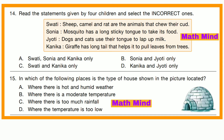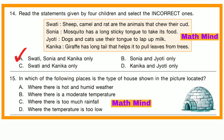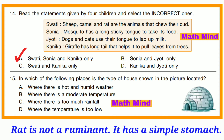Question number 14. Read the statements given by four children and select the incorrect ones. Swati: sheep, camel and rat are the animals that chew their cud. Sonia: mosquito has a long sticky tube to take its food. Jyoti: dogs and cats use their tongue to lap up milk. Konika: giraffe has a long tail that helps it to pull leaves from trees. Option A is correct: Swati, Sonia and Konika only. Cud is produced during a digestive process called rumination. Camel, cattle, deer, sheep etc. chew their cud and are called ruminants. But rat is not a ruminant — rat has a simple stomach, not multi-compartmented like ruminants.